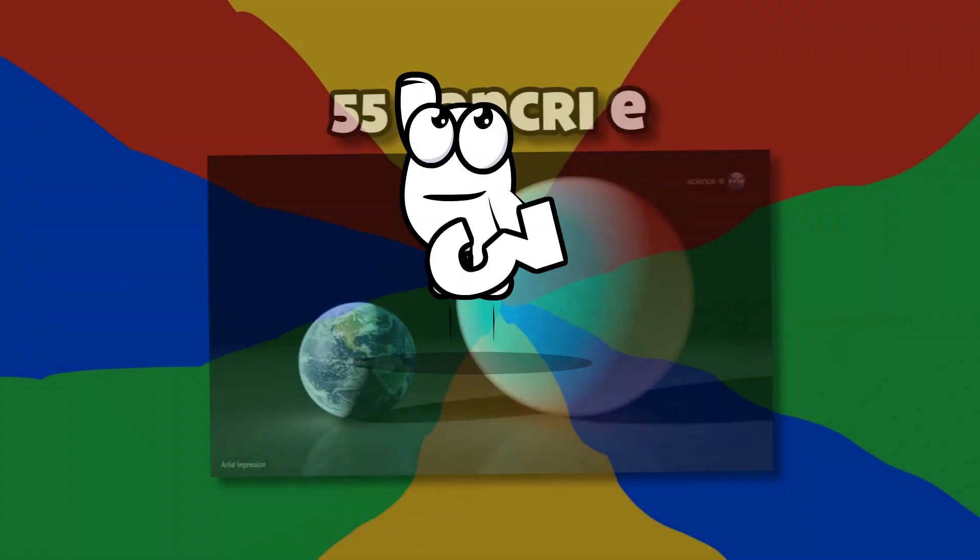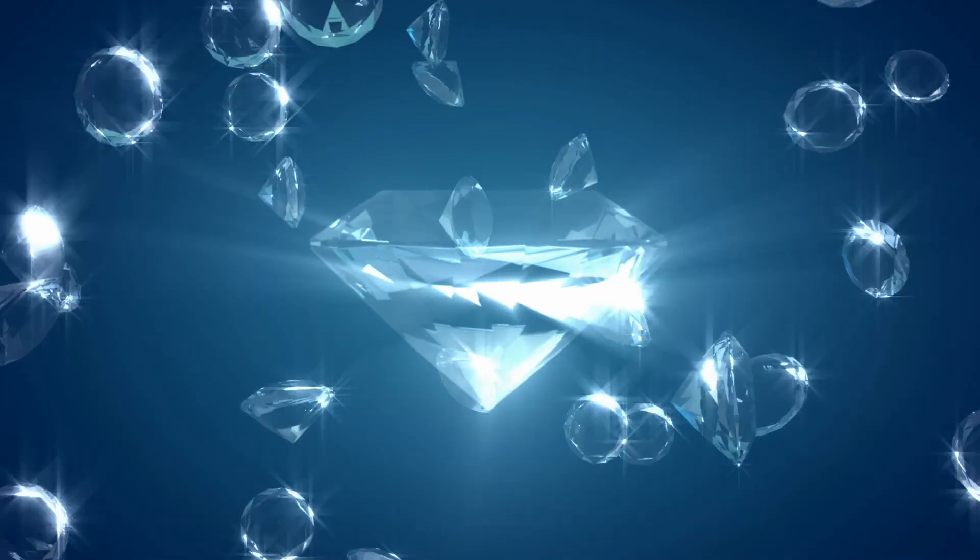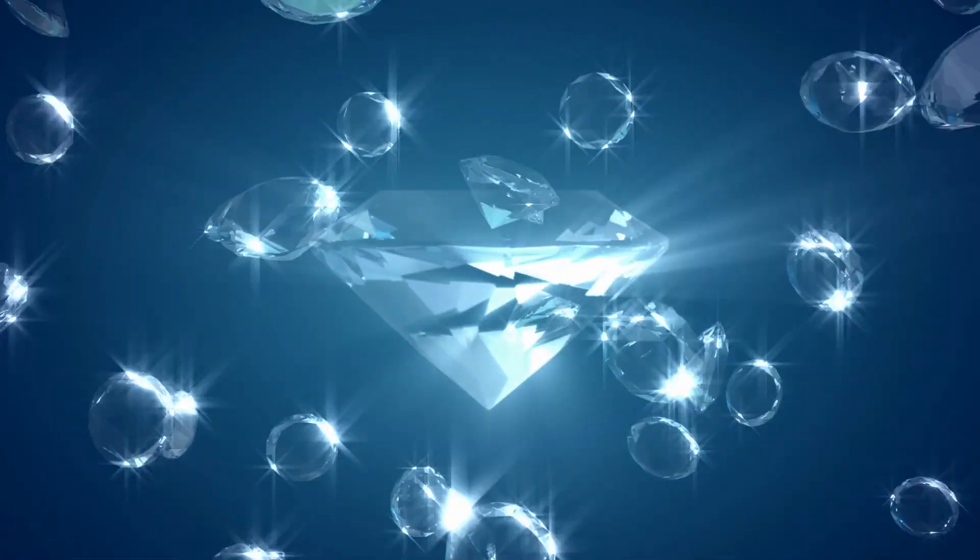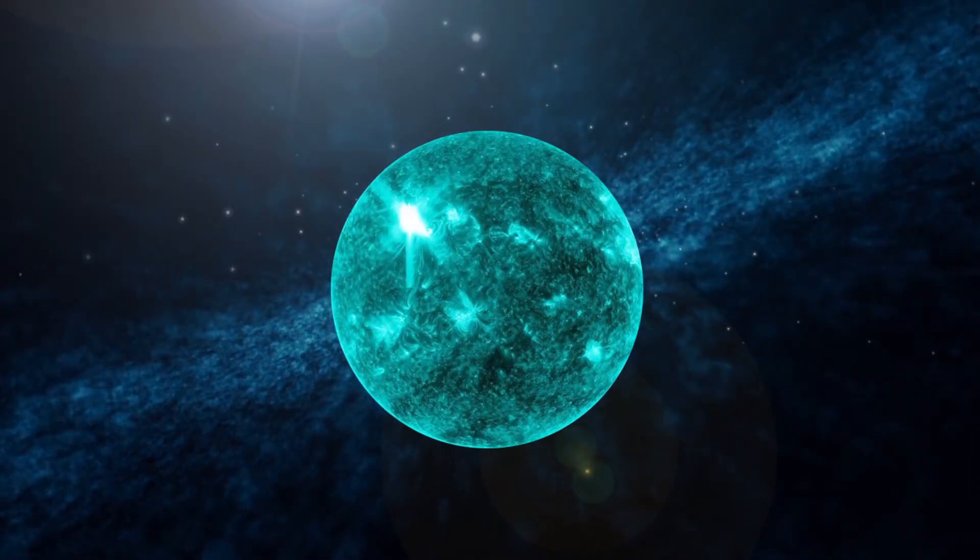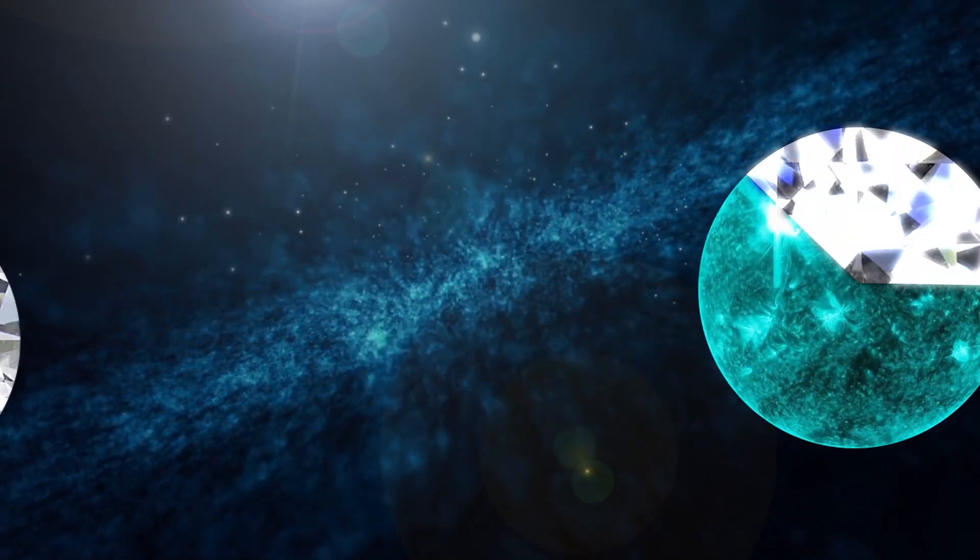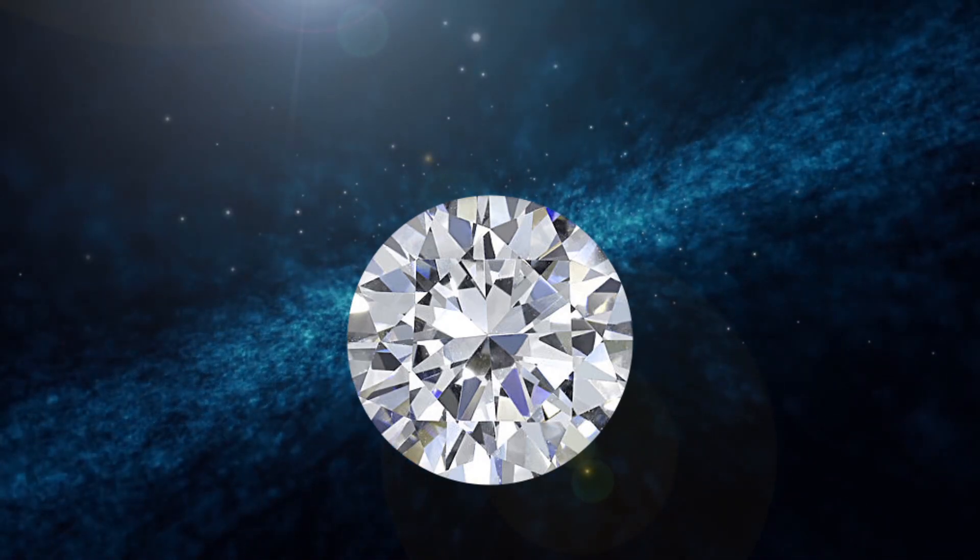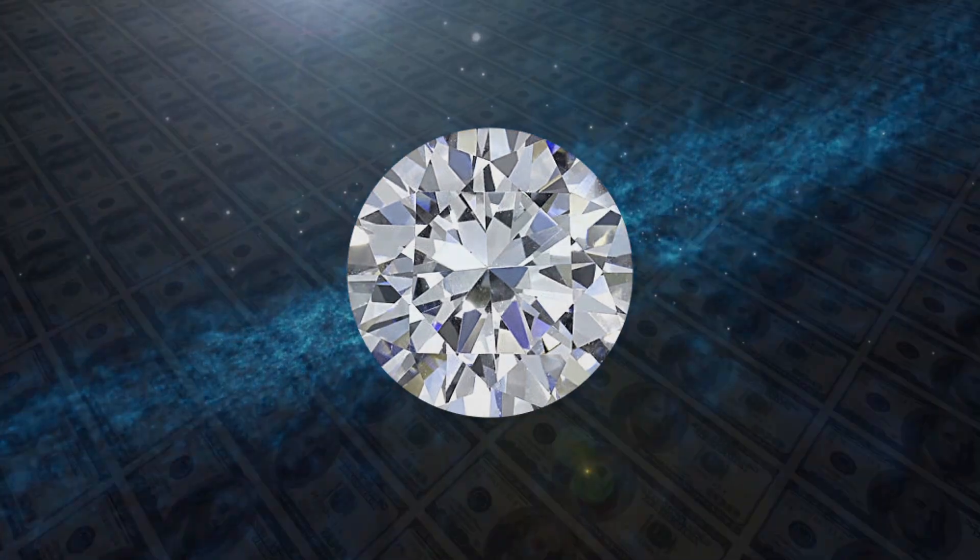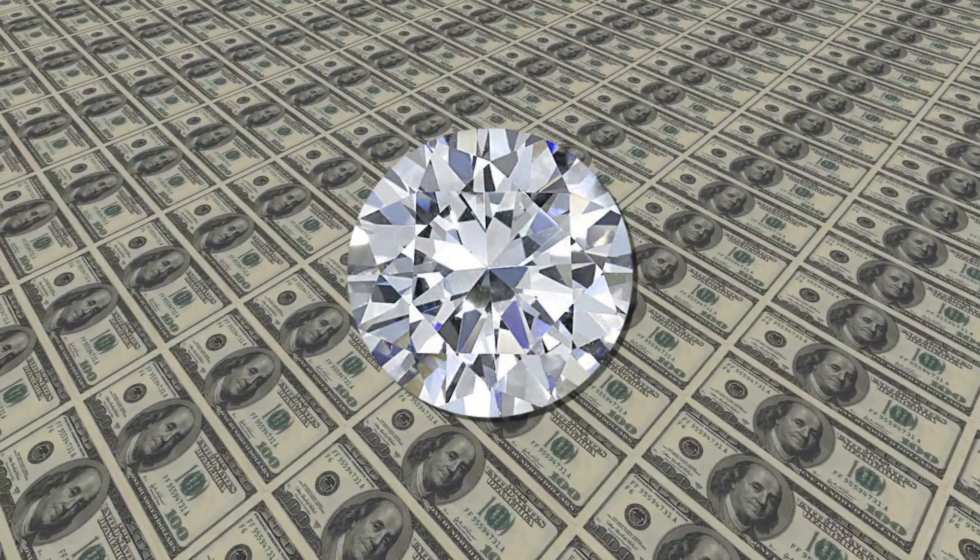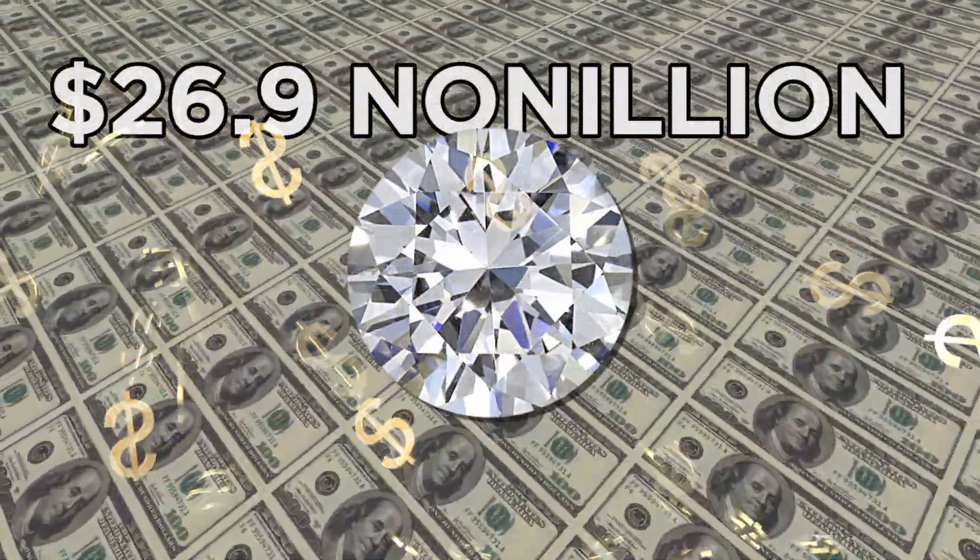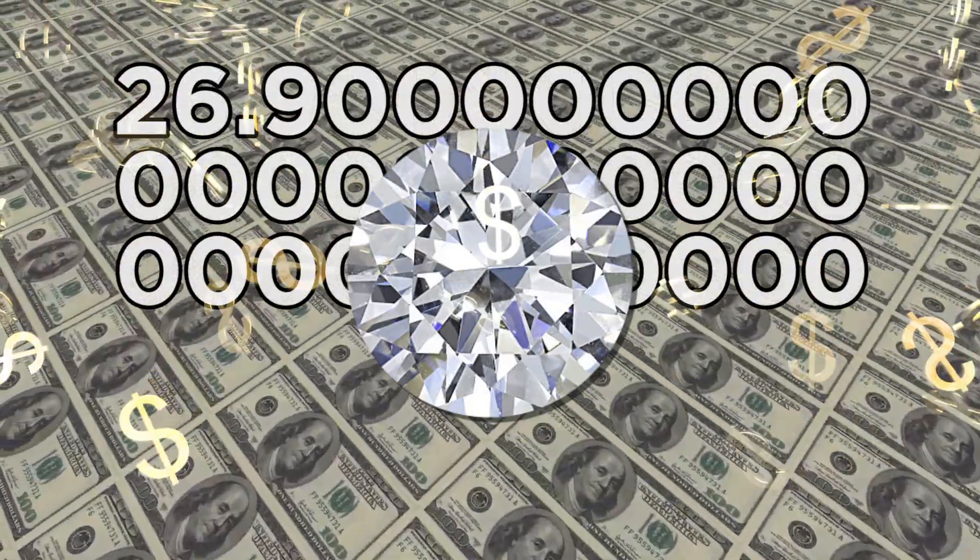Number 3, 55 Cancri e. Diamonds are amongst the most precious minerals on Earth. But on the exoplanet 55 Cancri e, it really isn't that precious or rare, as one-third of the planet is made from diamonds. If it was formulated into a single gem, it would be larger than Earth. Assuming the principles of economics didn't exist, it would also be worth around $26.9 nonillion at current diamond prices. That's a one with 30 zeros behind it.